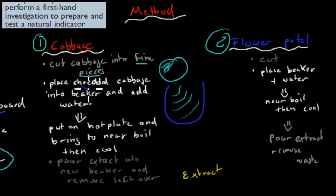So take the shredded cabbage, put it in the beaker, and we add some water. Then put it under the hot plate, anything that gives you a flame and produces heat. Place shredded cabbage into a beaker and add water. Then put it on a hot plate and bring it to near boil. Once it's at that stage, you take it off and allow it to cool.